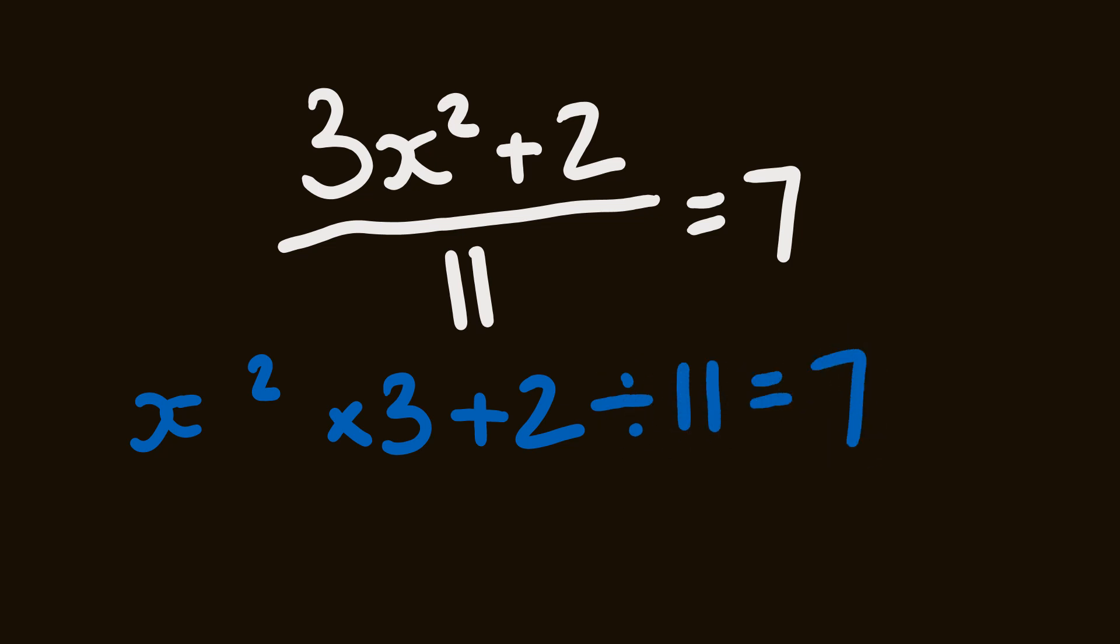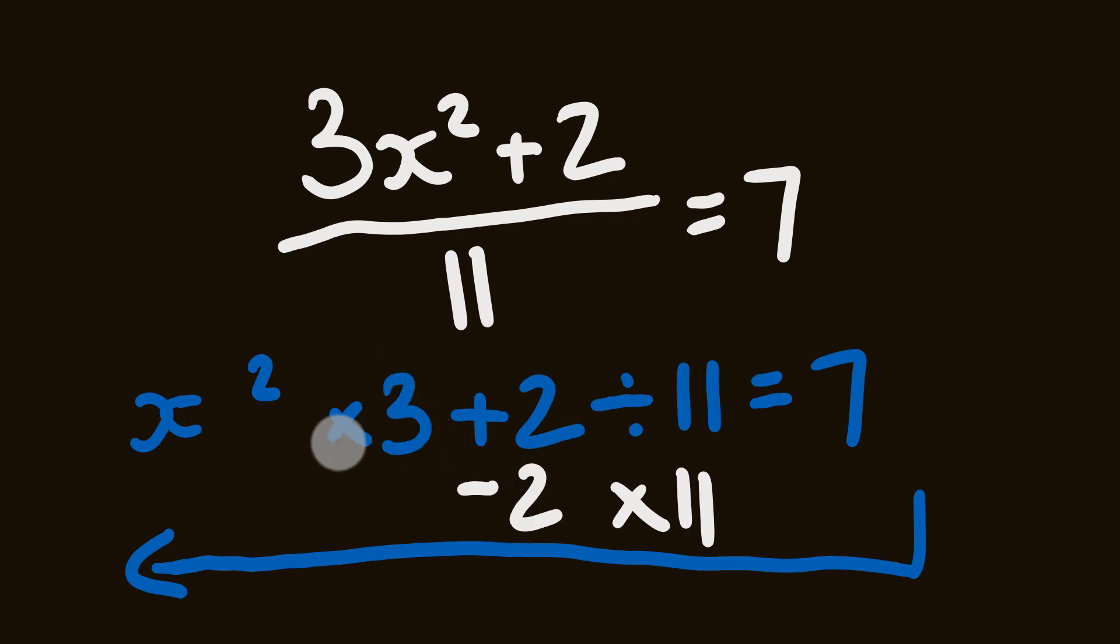So once again we're going to work backwards and then what we're going to do is do the opposite operations as we go. So let's do that. So instead of dividing by 11 we will multiply by 11. Instead of adding 2 we will subtract 2. Instead of multiplying by 3 we will divide by 3. Instead of square we square root. So let's have a look at our answer.